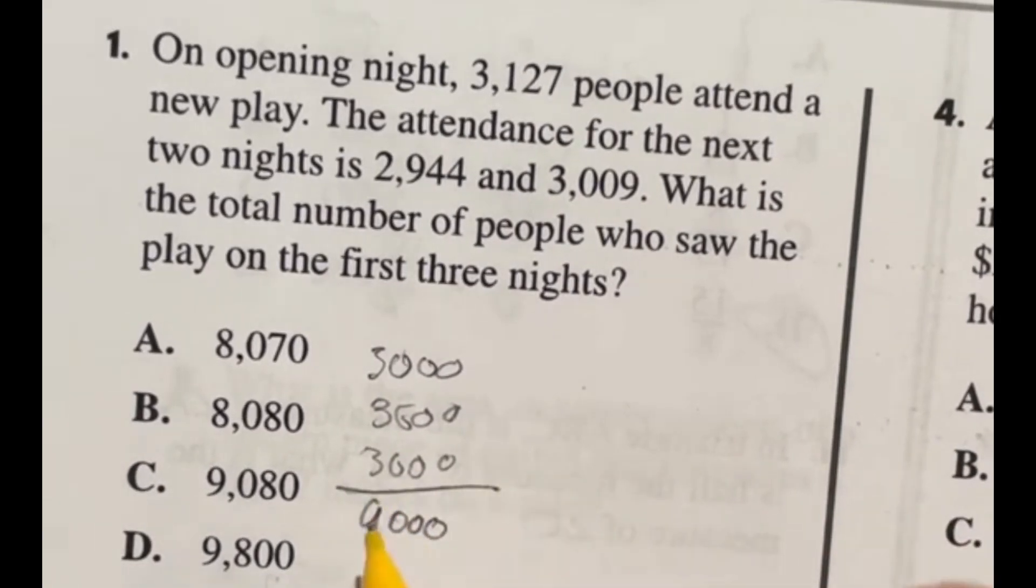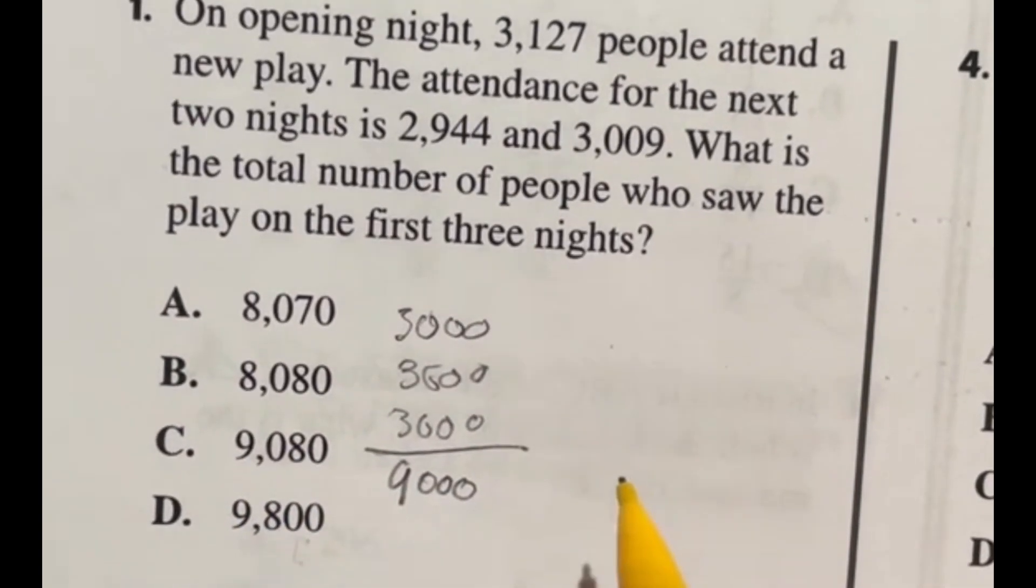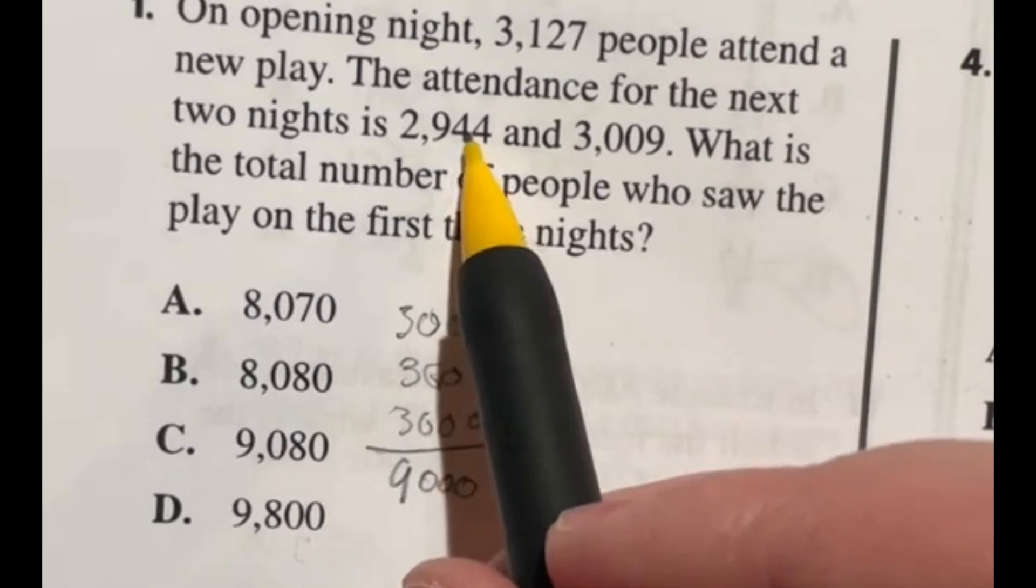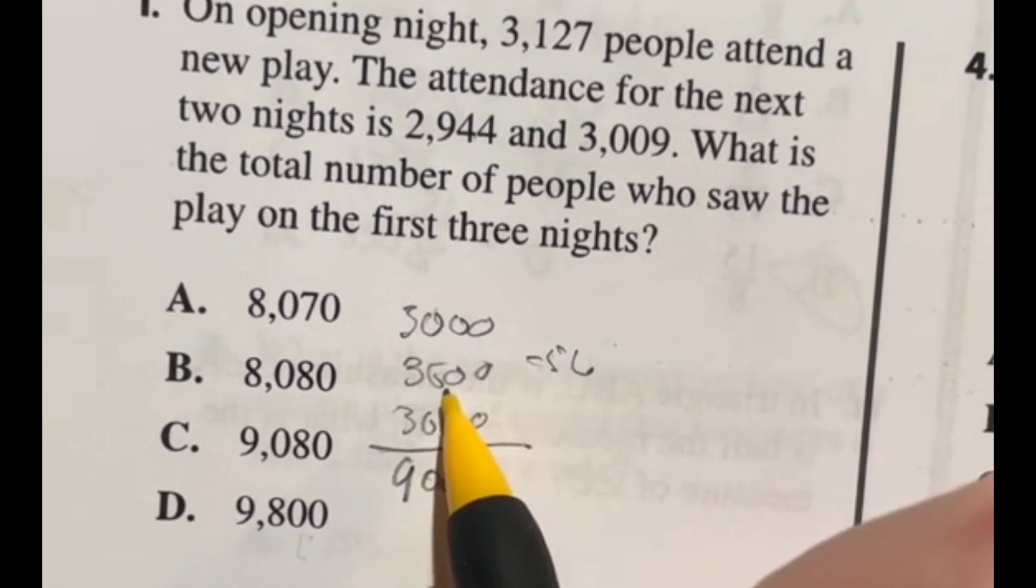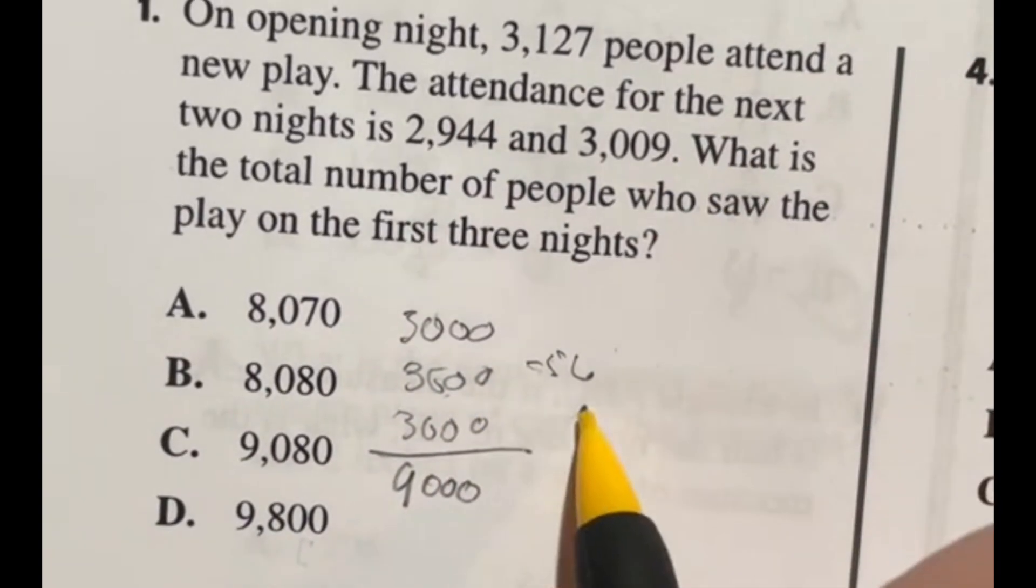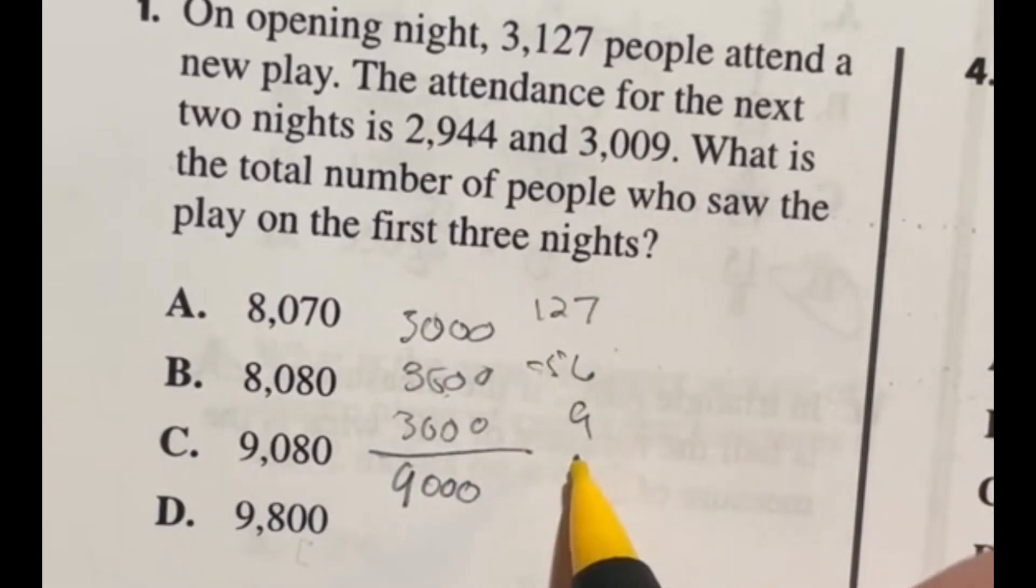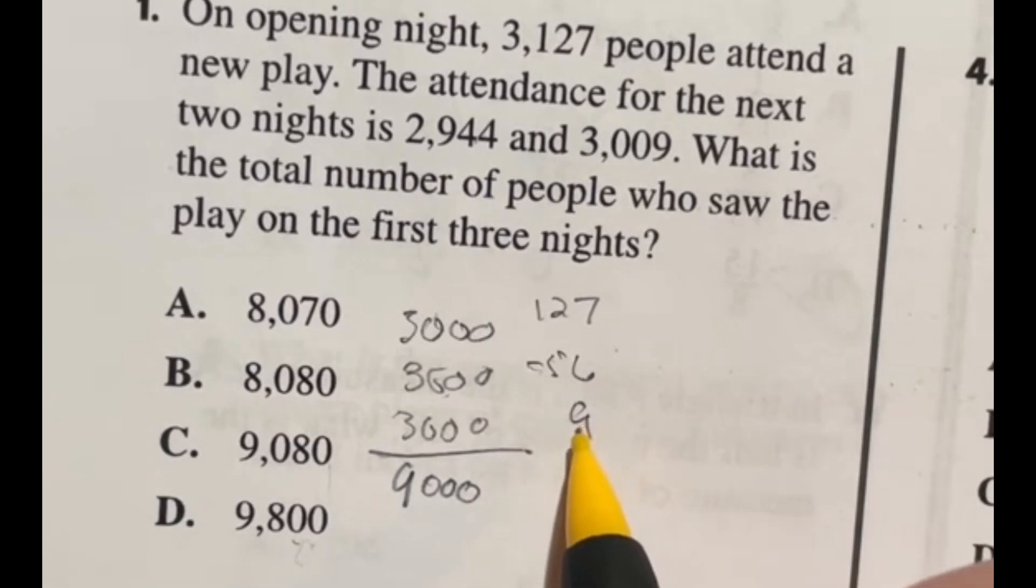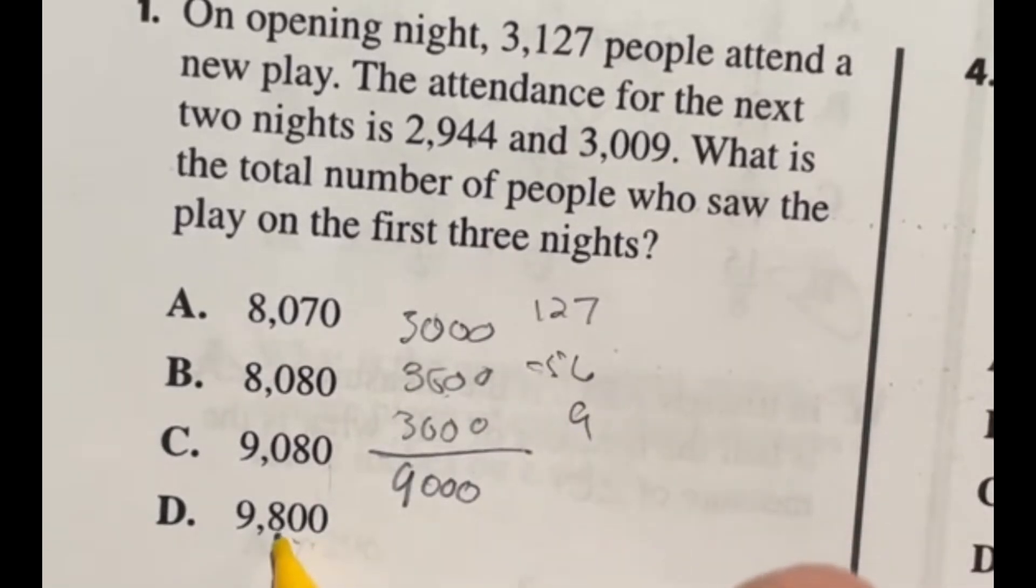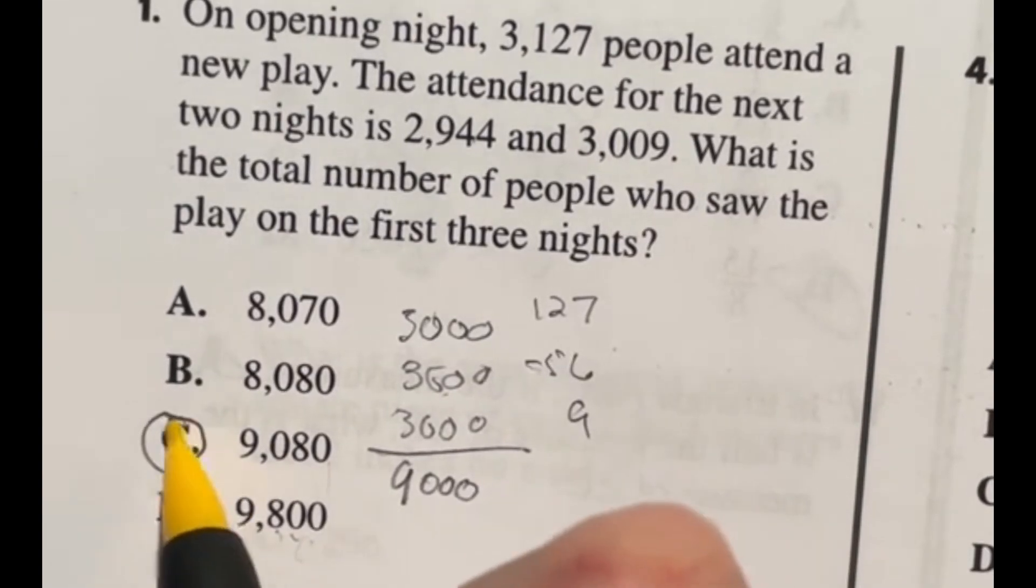All right. Now, when looking at that, that means one of these two is going to probably be our answer. Well, let's take a look. This guy right here ended up being about 56 short of being 3,000. This guy was nine over and this one was 127 over. So if I'm looking at these, my two options with the 9,000 are 80 and 800. 127 minus 56 plus 9, there's no way that's getting me up to 800. So that means this answer must be 9,080.